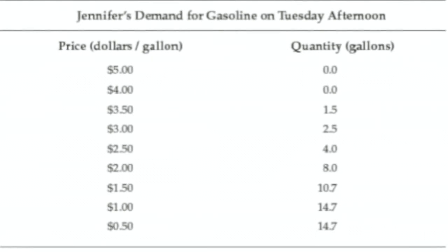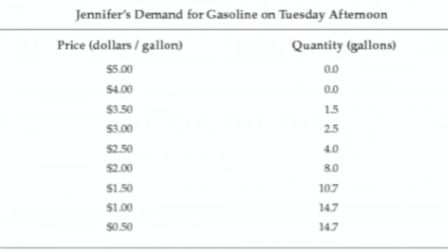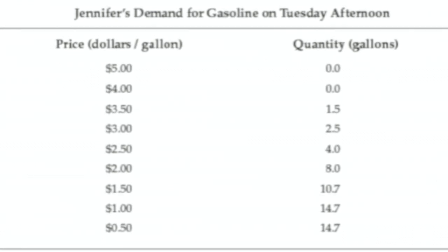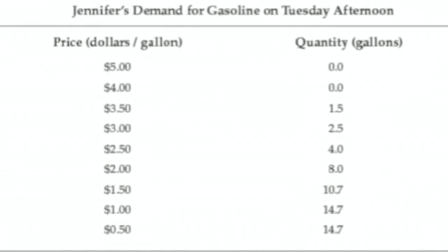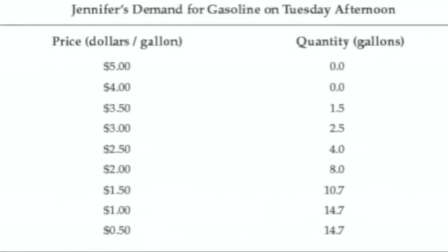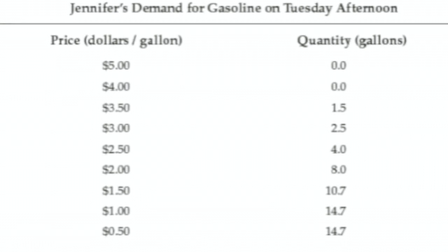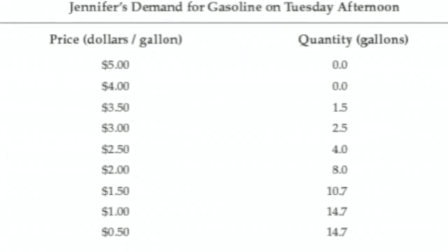Strictly speaking, somebody's demand schedule would only be applicable for a fleeting moment, because we're holding all these other things equal. On this particular Tuesday afternoon, we assess Jennifer and her situation and ask: hypothetically, for various prices of gasoline, how many gallons would she want to buy? At $5 a gallon she'd want zero; at $4 a gallon, also zero; at $3.50, she buys 1.5 gallons; at $3, she buys 2.5 gallons; and it maxes out at 14.7 gallons at $1 a gallon. Even at $0.50, Jennifer still just wants 14.7 gallons.